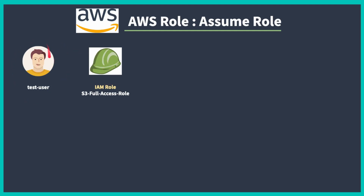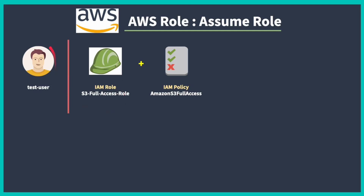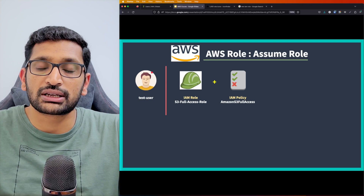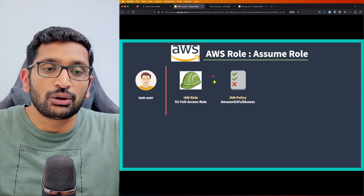The test user exists independently and the role also exists independently. Whenever you create a role, you need to assign some kind of policy with it - the role is just a name, but what that role can do is governed by the policy. In this IAM policy document, we will create policies to allow S3 access. So right now there are two entities: this user existing independently, and this role with its attached policy granting S3 permission.